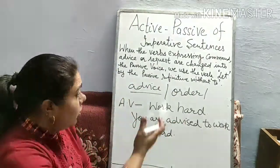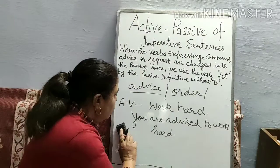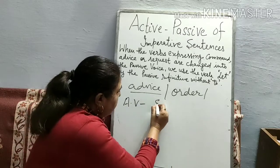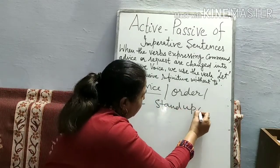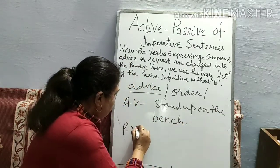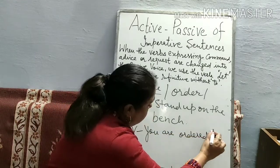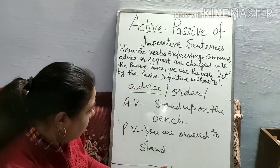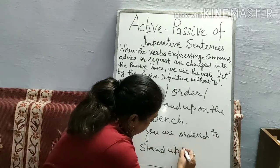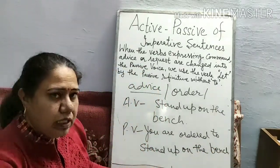For order sentences — for example, a teacher giving an order: 'Stand up on the bench.' The passive voice will be: 'You are ordered to stand up on the bench.' We use 'you are ordered to' followed by the active infinitive verb form — 'to stand up on the bench.'